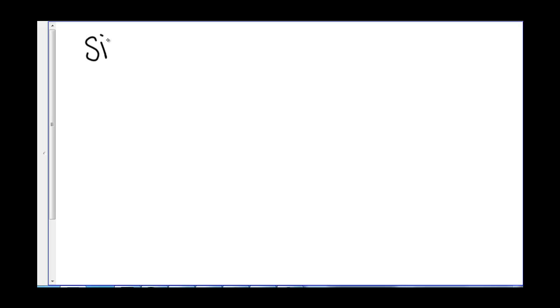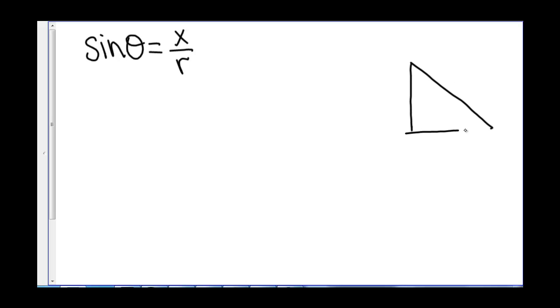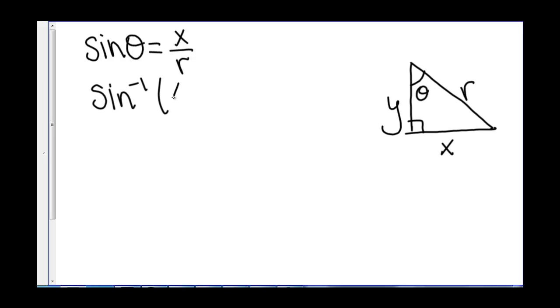What are inverse trig functions? We know that the sine of an angle equals x over the radius. If we have a triangle with sides r, x, y, and angle theta, then the inverse sine of x over r equals theta.